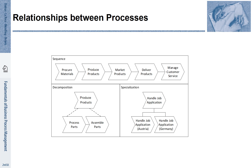So how can we conceptually describe these processes at a very abstract level? There are three mechanisms. The first is the so-called sequence relationship: we express that activities are in a sequential order — once one activity is done, the next one is started.